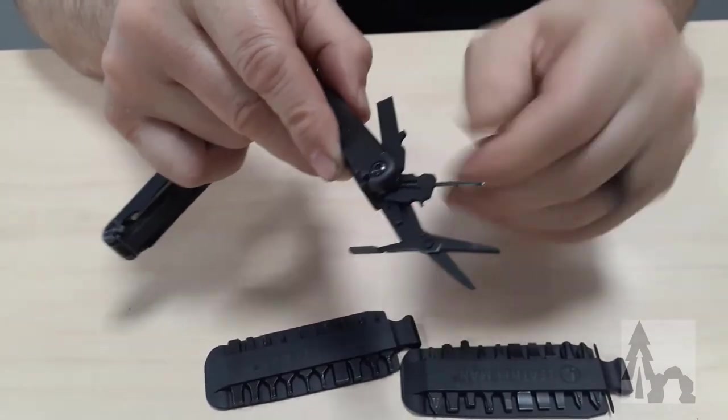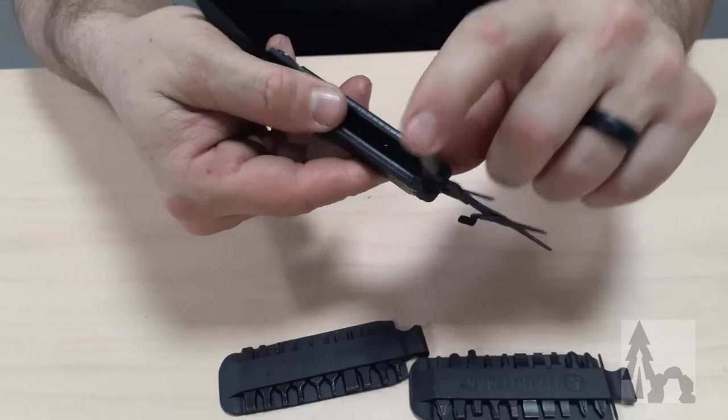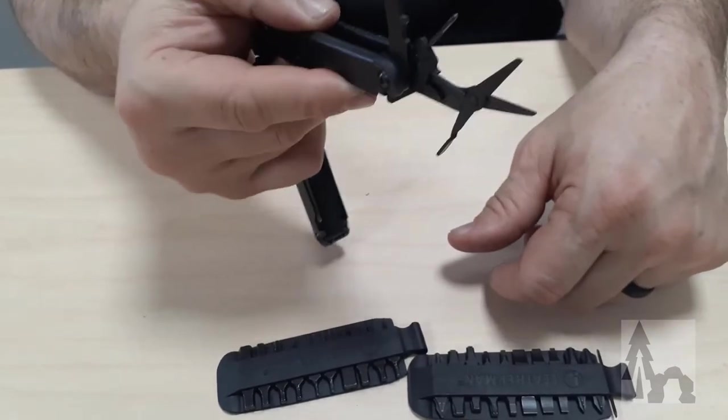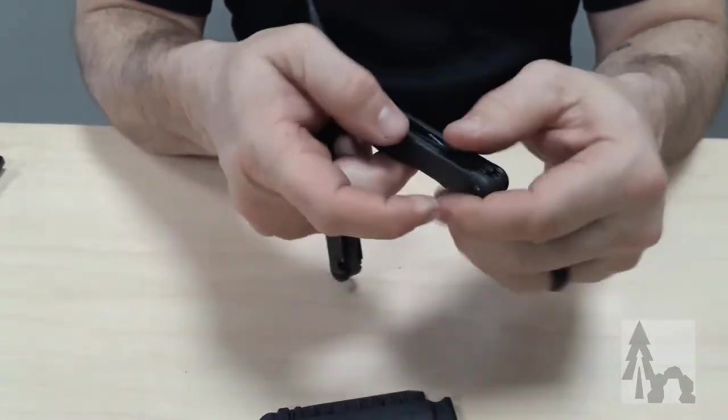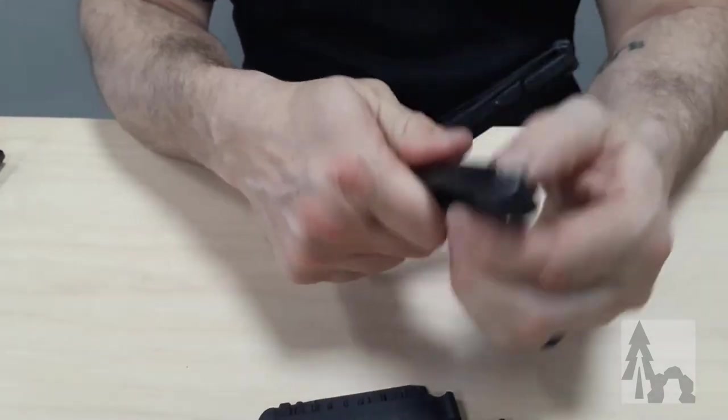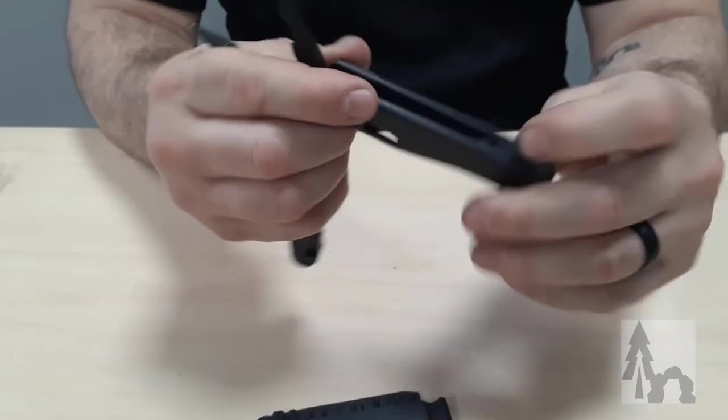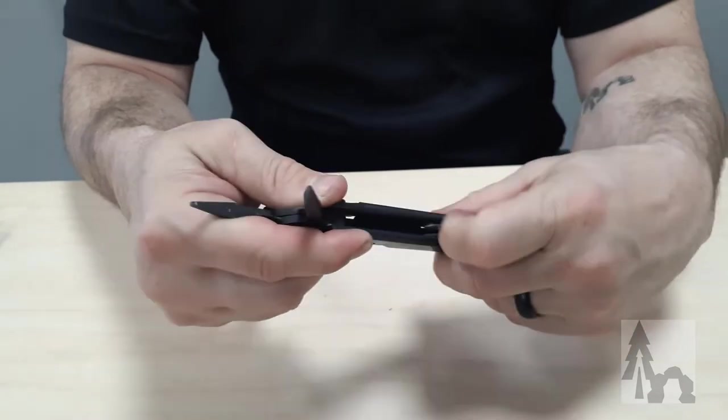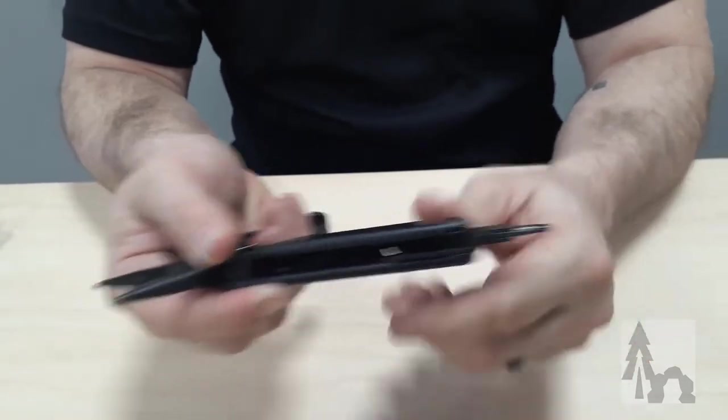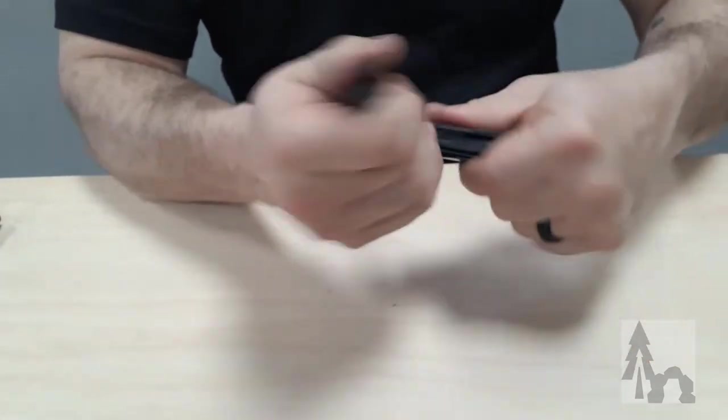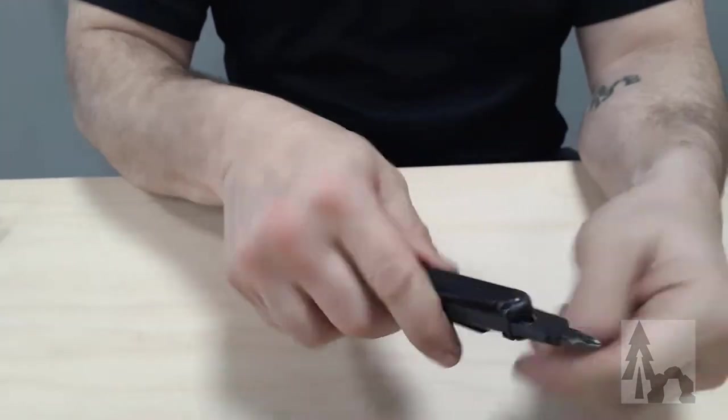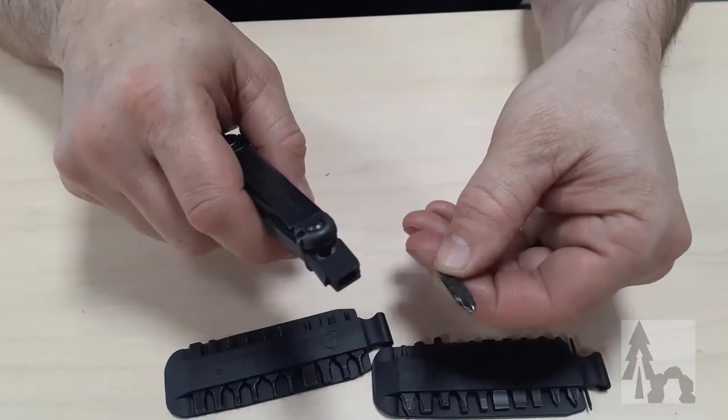Besides the mini bit driver, this side has a large screwdriver or sometimes I've used that as a little pry bar or pry tool. On the other side, also with the locking mechanism, we've got the standard Leatherman bit driver.